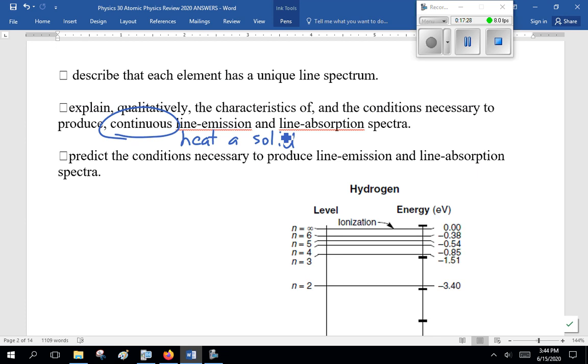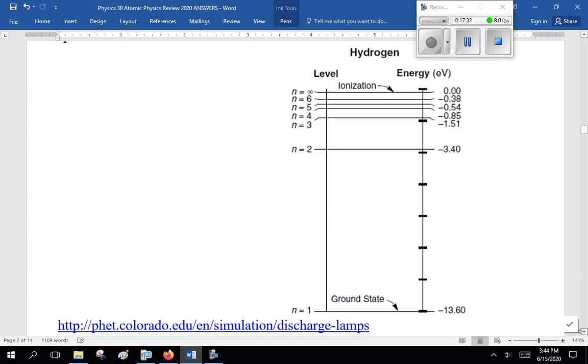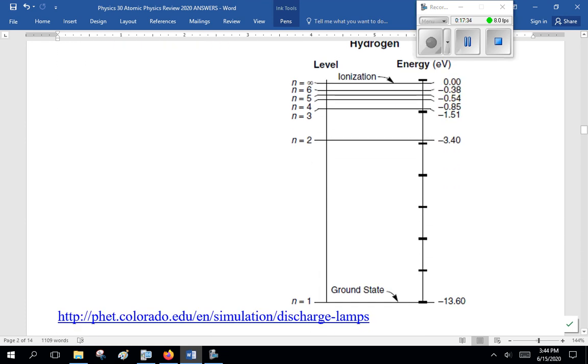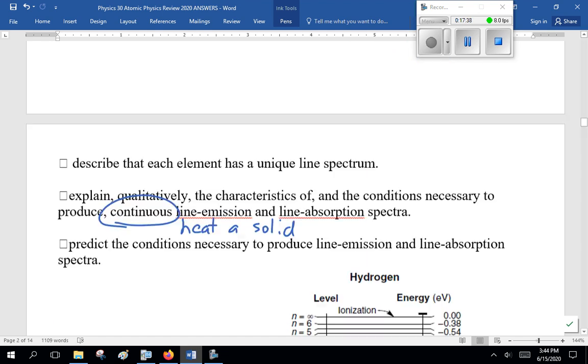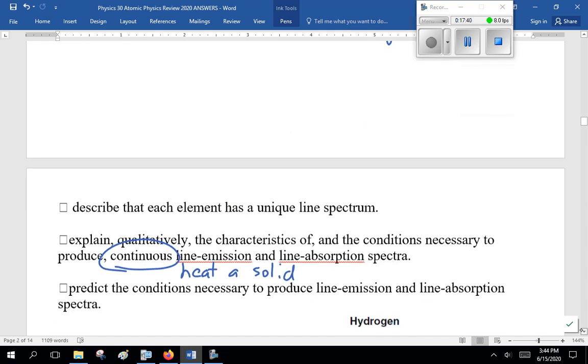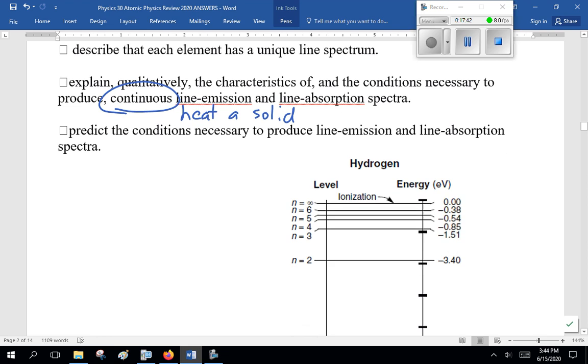Describe that each element has a unique line spectrum. Explain qualitatively the characteristics of and the conditions necessary to produce continuous line emission and line absorption spectrum. And predict the conditions necessary to produce a line emission and line absorption spectrum. Well, continuous line emission, you heat a solid. Line absorption, that's getting into a black body. Now, that's what I mean, continuous, like the spectrum.